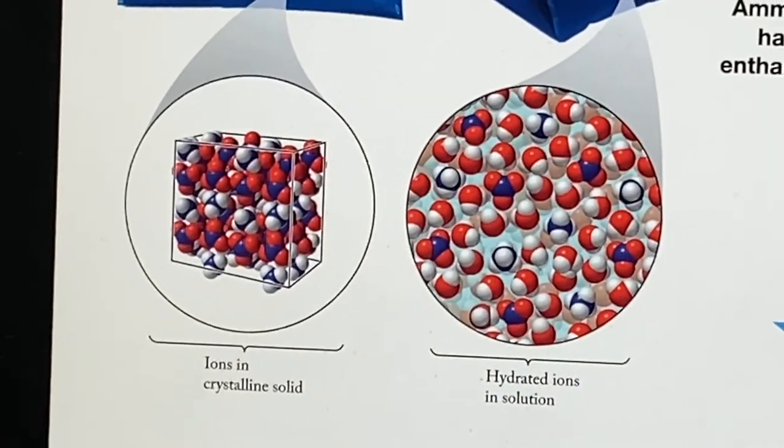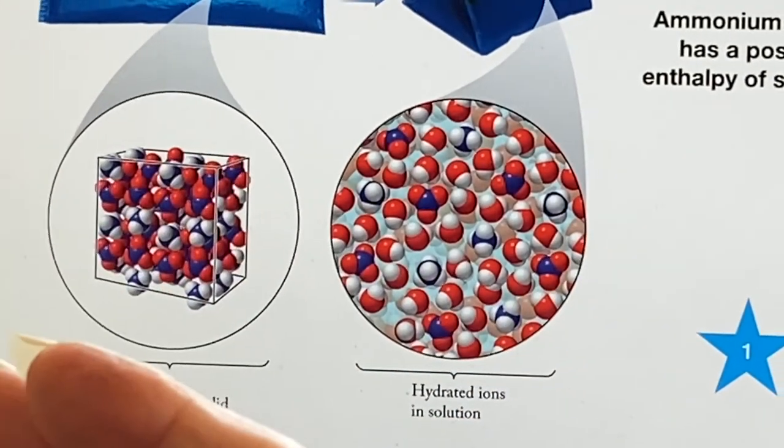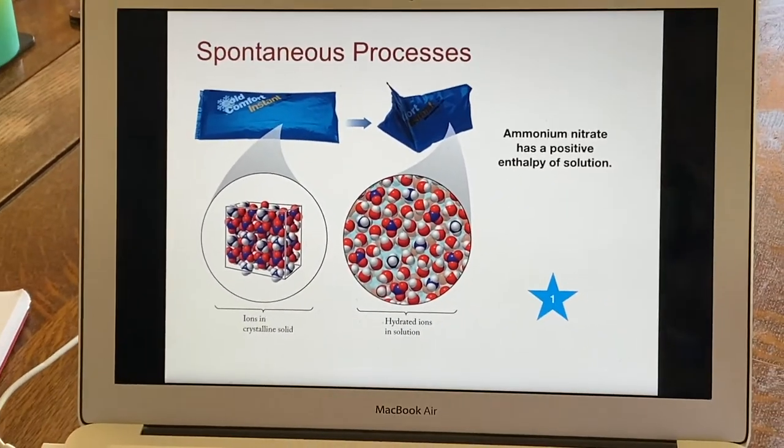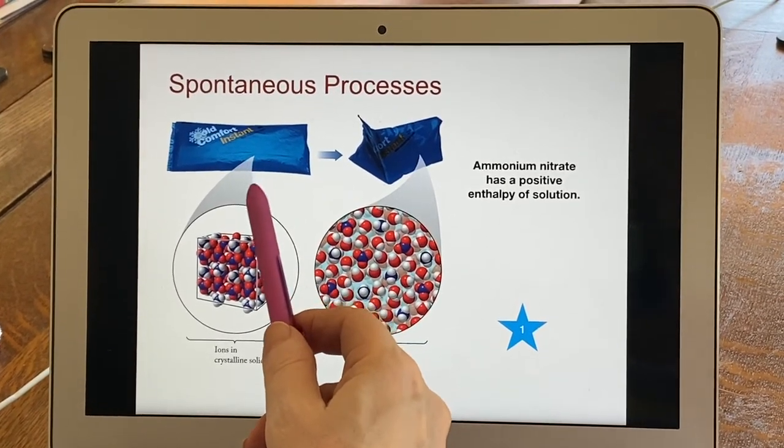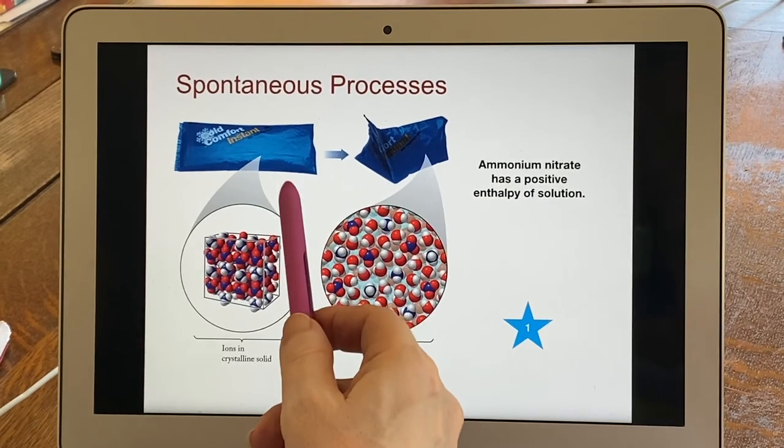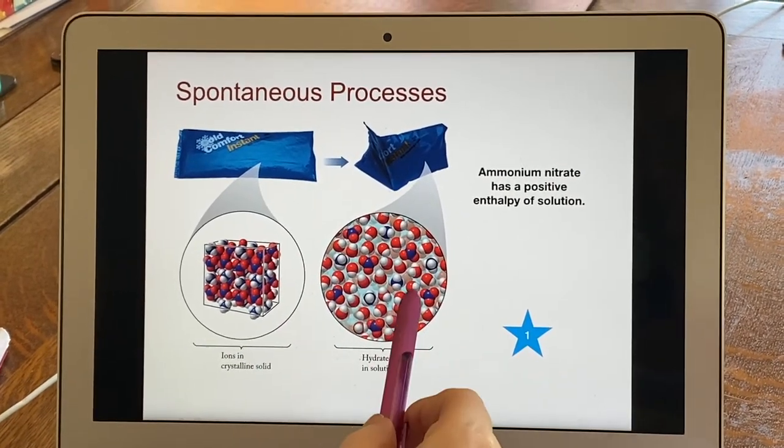That means it's pulling energy into itself. Whatever is next to it, the energy is coming out of that. And so that is why it is used for a cold pack. It's pulling the heat out of your injured muscle and using it to do this hydration within the pack itself.